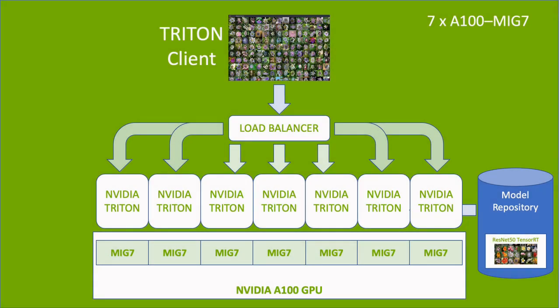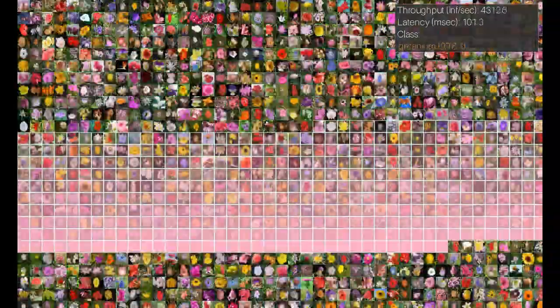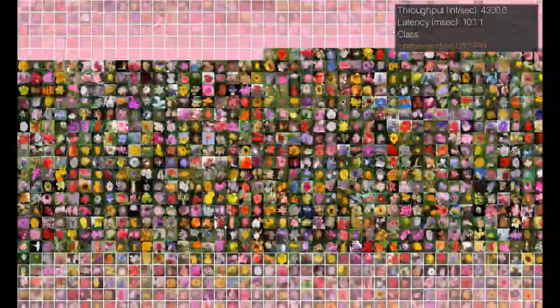Now, we use all 7 MIG instances of an A100 GPU. The inference throughput is around 4320 inferences per second. With all 7 MIG instances of an A100 GPU, we achieved a throughput at least 4.5 times higher than that of T4 and V100 GPUs within our latency budget.